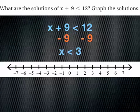When I graph this inequality, it says graph the solutions. I have my number line. I'm going to have an open circle at 3 because it's just a less than.